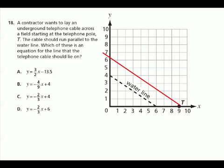Okay, now an important part of this question is the word parallel. Lines that are parallel have the same slope. So we need to figure out the slope of the water line and then we're halfway there. Then we know which one of these equations has the same slope.